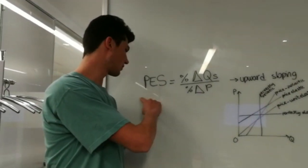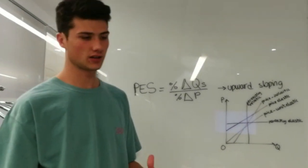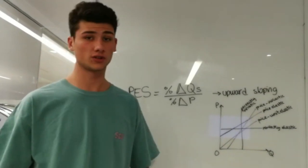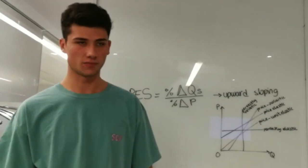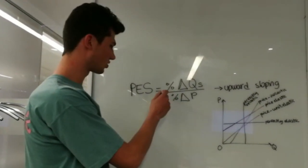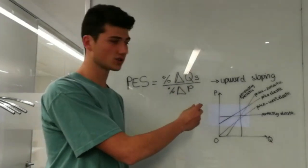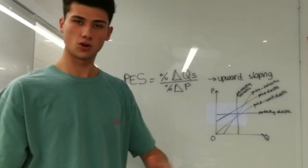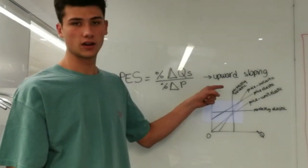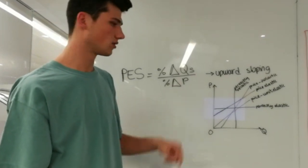In order to explain the price elasticity of supply, we can define it as basically a way to measure the responsiveness of the quantity of supply to a change in price. This can be represented with the following function, which means the percentage of the change in the quantity of supply divided by the price. Contrary to the PED, this is considered as upward sloping, and that can be represented in the following graph.